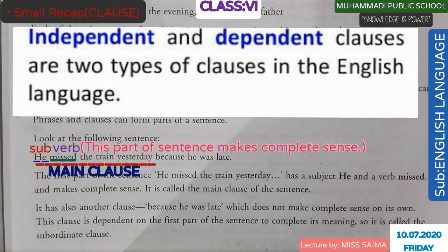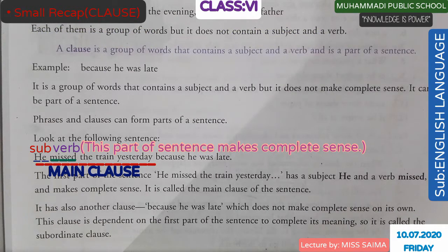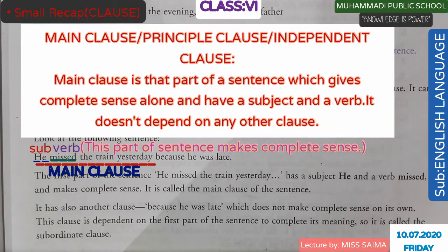In this example, 'He missed the train yesterday' is a complete sense — it is called the main clause. The main clause is also called the principal clause or the independent clause. It is called the independent clause because it does not depend on any other clause.